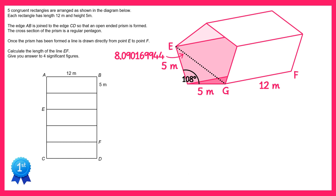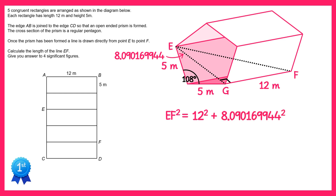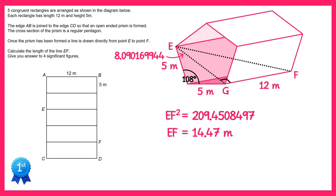What we're going to do now is draw in the line from E to F, and you should notice that EGF is a right-angled triangle. Since we have a right-angled triangle and we know two of the sides we can use Pythagoras. So EF squared equals 12 squared plus EG squared. If you work out the right hand side you'll get this, and then square rooting both sides gives EF, which to four significant figures is 14.47 meters.